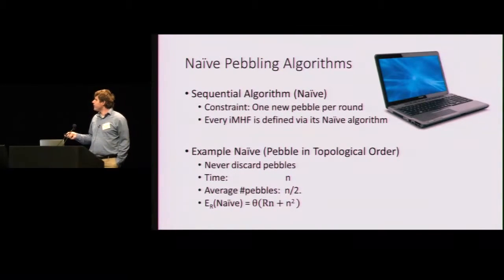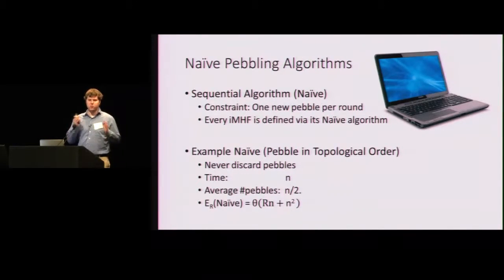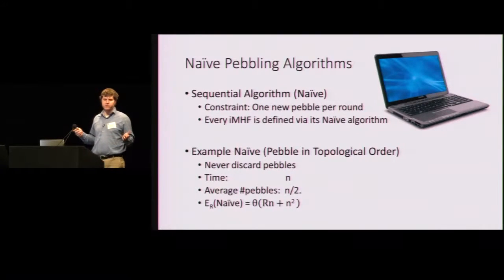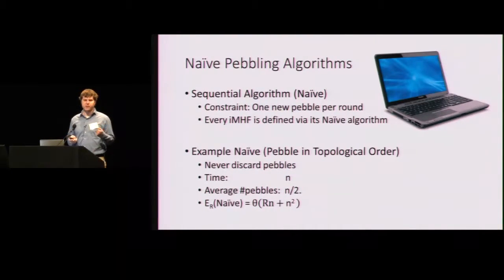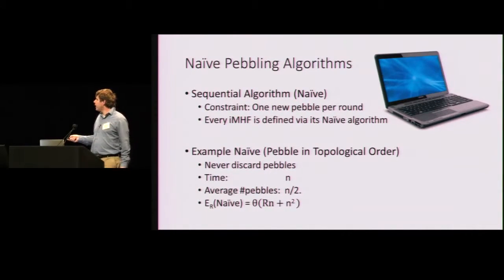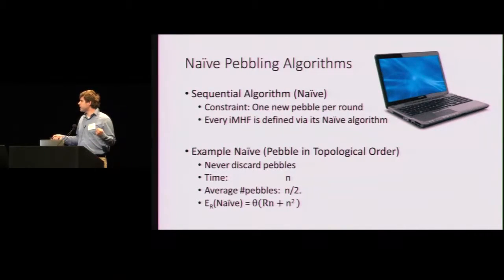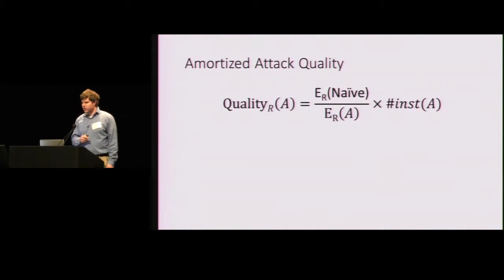So an example of a naive pebbling algorithm is just to pebble the graph in topological order, node 1, node 2, node 3, etc., and never discard pebbles. So how long does this take? It takes n steps, and we have an average of n over 2 pebbles on the graph at each point in time. So the expected cost, or the cumulative energy cost, is going to scale with n squared.